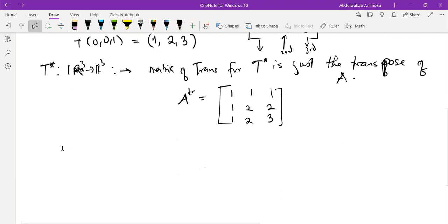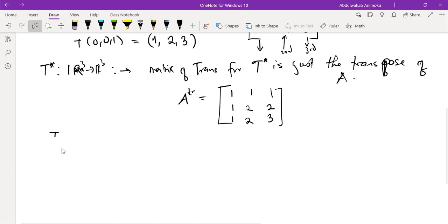This transformation can now be found using the matrix of transformation. If I want to find T of any vector in R, remember that (u,v,w) is a vector in R³, because this is from R³ to R³. If I want to find this, this is basically just multiplying the matrix of transformation with this vector.